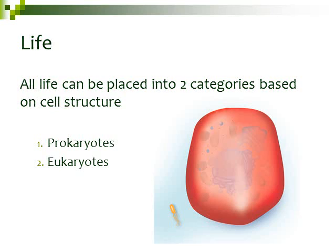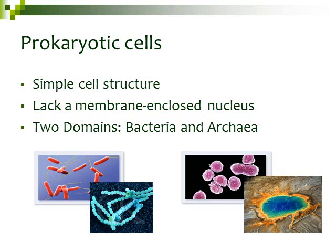We're going to start off with the prokaryotic cell. Prokaryotic cells have a really simple cell structure. What makes a prokaryotic cell a prokaryotic cell is that it lacks a membrane-enclosed nucleus. The nucleus is where genetic information is stored, but instead of storing it in a membrane-enclosed structure, the genetic information in a prokaryotic cell is just in a region — it's not protected by any membrane.